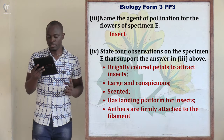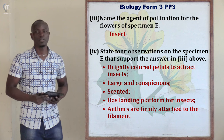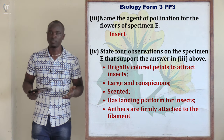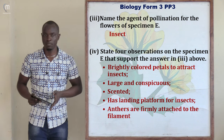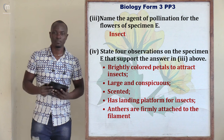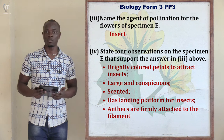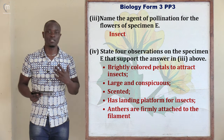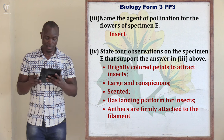Roman 3 asks for the agent of pollination for the flower of specimen E. The agents of pollination include water, wind, and animals (including insects). Looking at this flower, it is brightly colored and large. Therefore, the agent of pollination is insects, because insects are attracted to brightly colored, large petals.